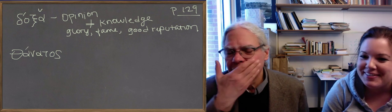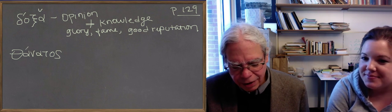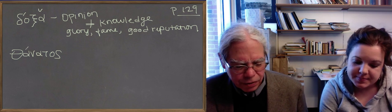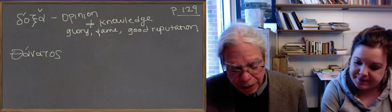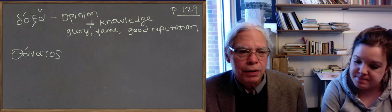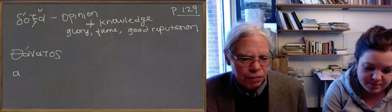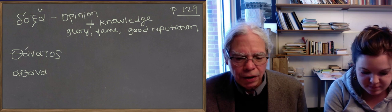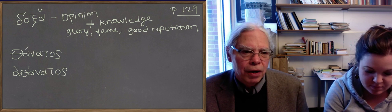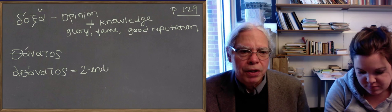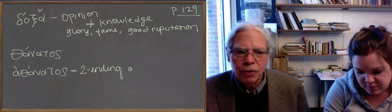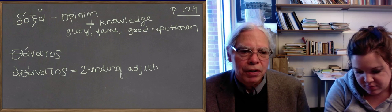You ever learn this one? No? Anyhow, I can't remember who wrote this, but there aren't many cognates of this word. But it gives us, more importantly, it gives us the noun death, but more importantly, the two-termination adjective, ἀθάνατος. As you know, Greeks believed that, and called their gods the immortal ones.